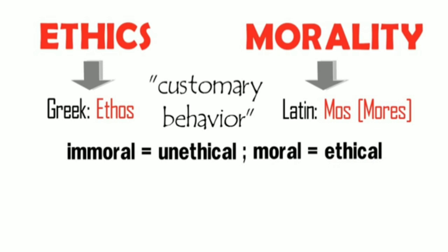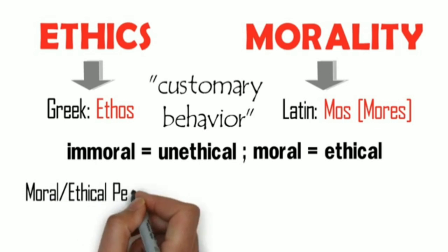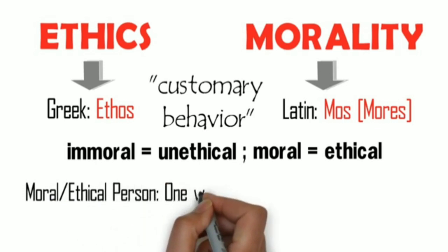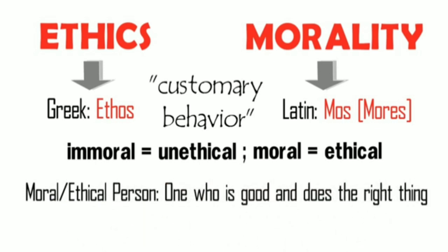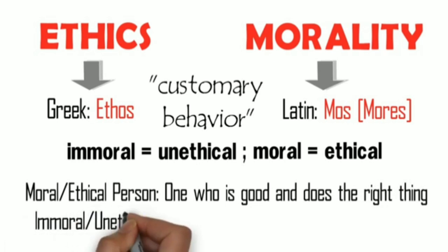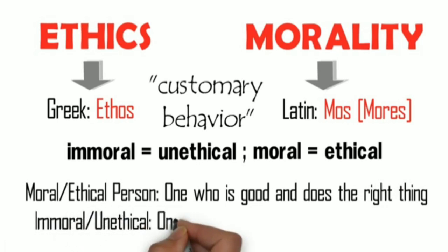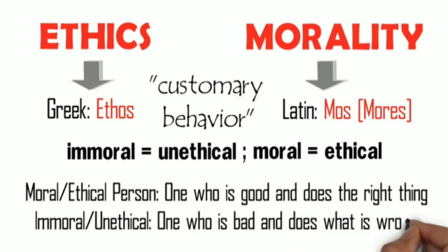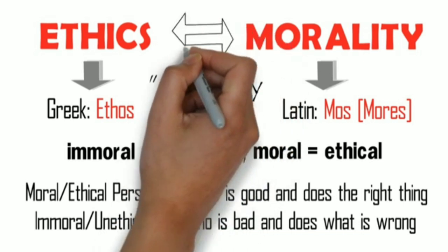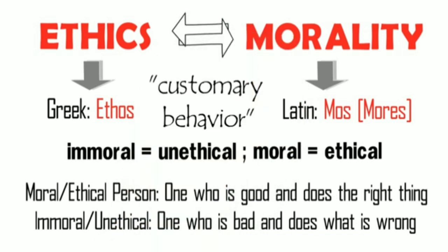This is the reason why we say that a moral or ethical person is one who is good and does the right thing, and an immoral or unethical person is one who is bad and does what is wrong. As we can see, the terms ethics and morality can be used interchangeably.